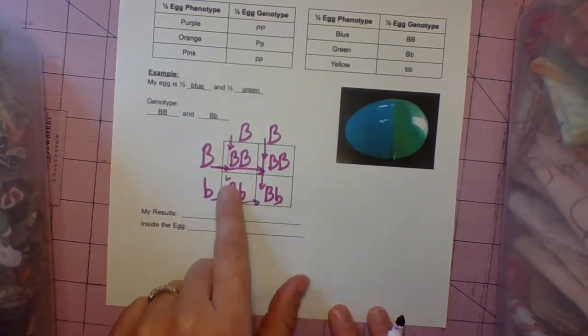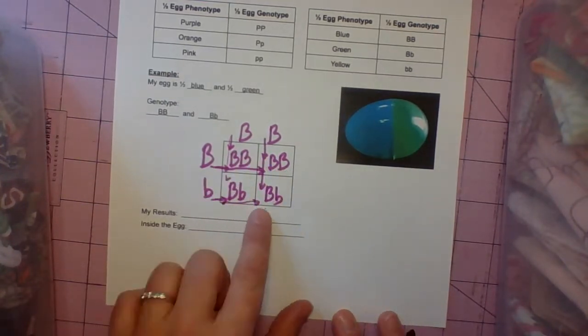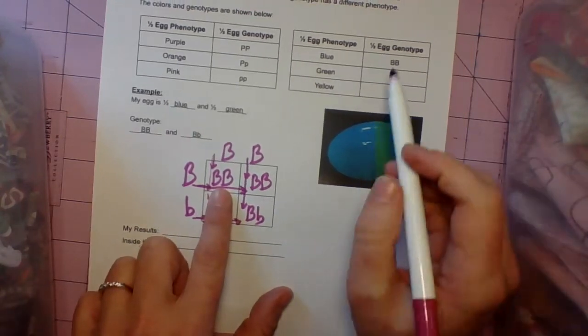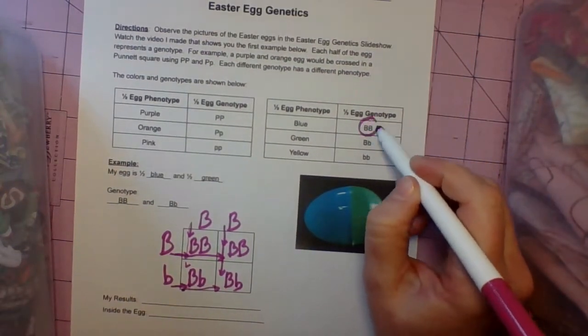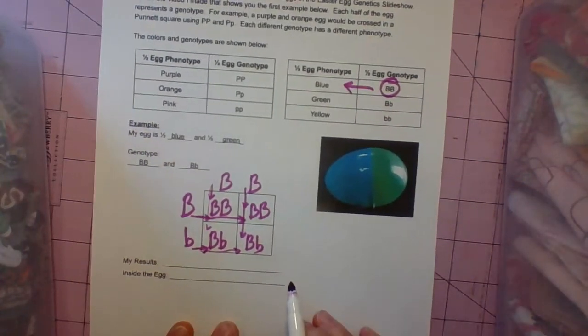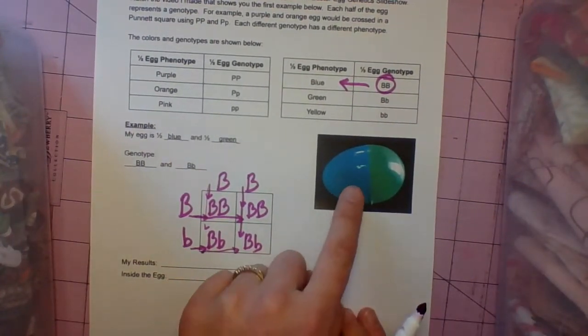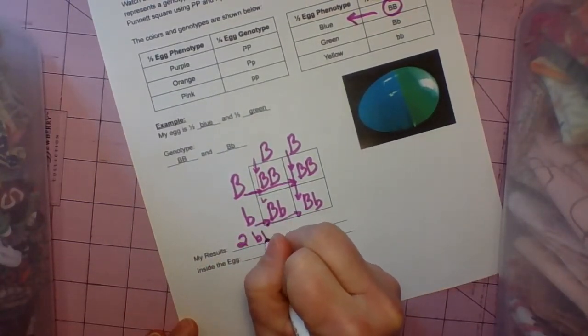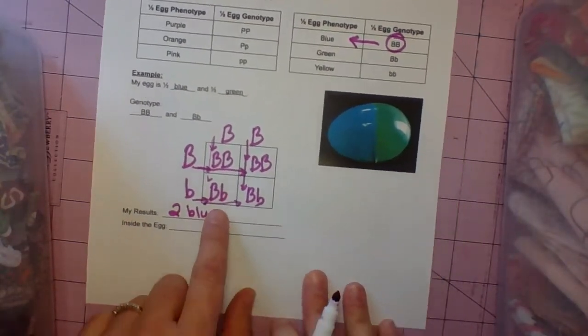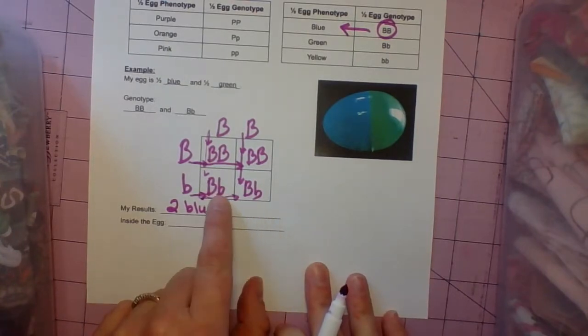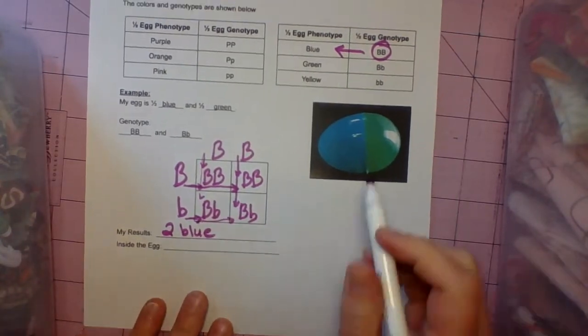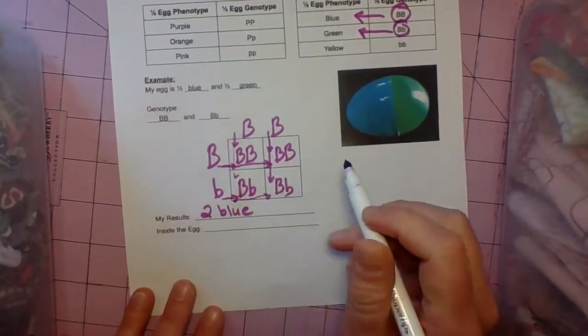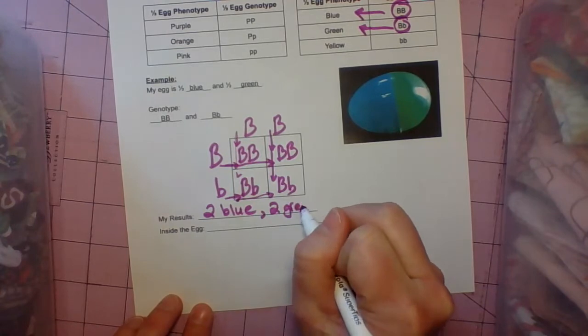Now we look at our results. We have two homozygous dominants. Homozygous dominant, that means blue. So my results, when I open this egg, I expect to find two blue. And we have two heterozygous here, big B little b. That means green. I expect two blue and two green.